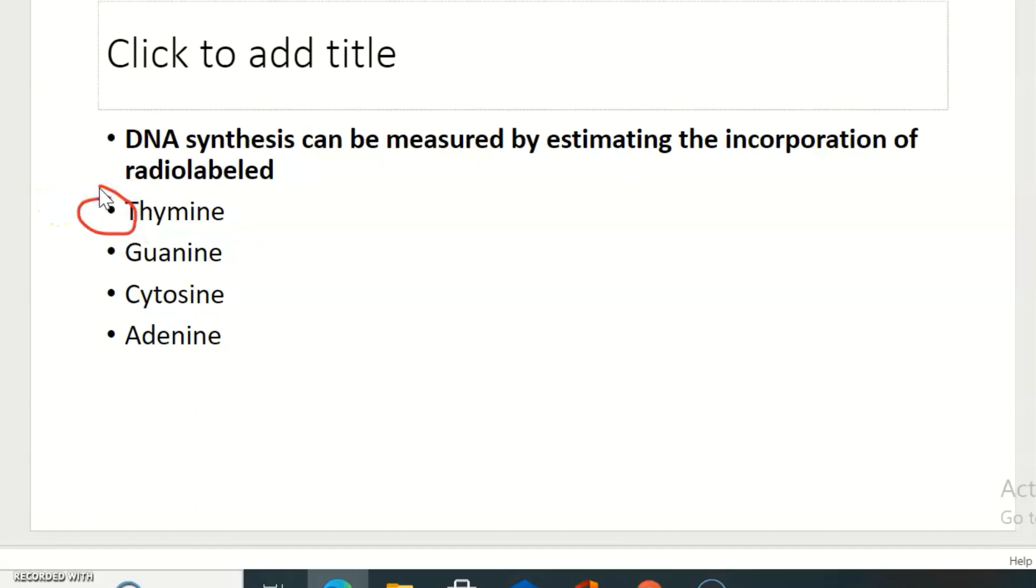For RNA synthesis, uracil can be measured by estimating the incorporation of radiolabeled nucleotides.